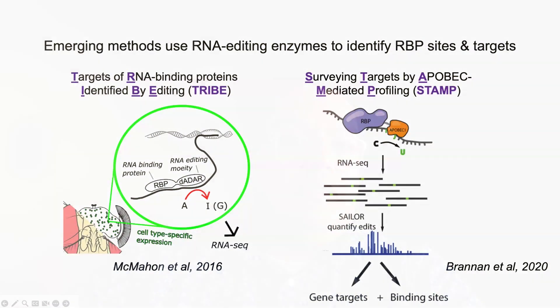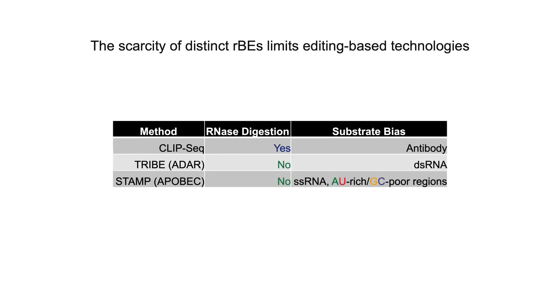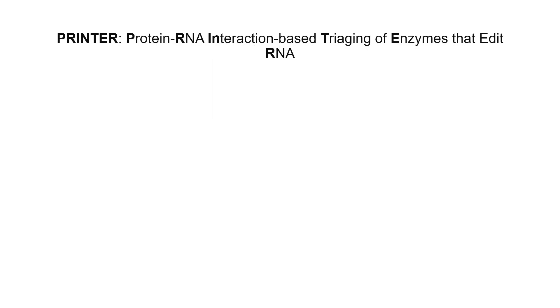While powerful and while allowing us to overcome the limitations of using antibodies, TRIBE and STAMP still have limitations, specifically limitations due to the inherent bias of the RNA-based editors that are used. To expand the number of available editors that we can use for TRIBE and STAMP, we developed PRINTER — protein-RNA interaction-based triaging of enzymes that edit RNA — to profile additional RNA-based editors. PRINTER is a novel two-component system designed to evaluate RNA-based editors, or RBEs.